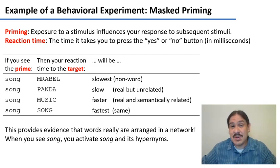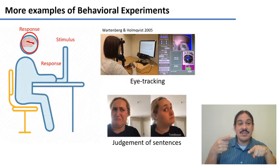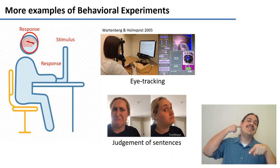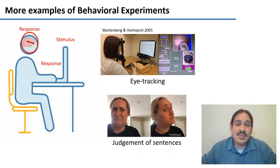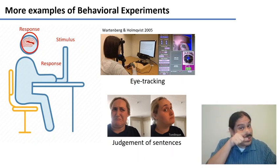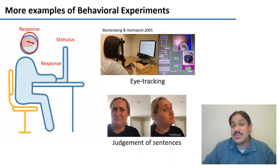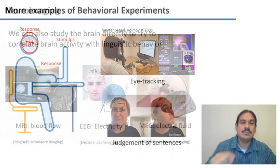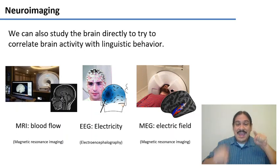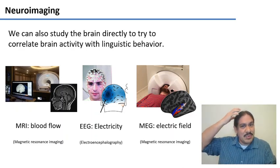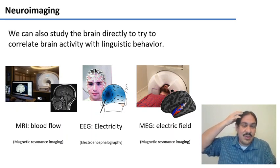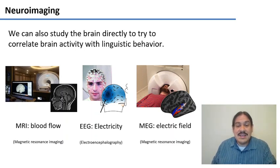This is a type of behavioral experiment — we look at your reaction to a stimulus. A stimulus from the screen enters your eyes, goes to your brain, and then you respond through your fingers on the keyboard. There are also experiments involving eye tracking, which follows your eyes as you read, and grammaticality judgments of sentences — used in syntax, for example. These all observe behavior, examining your brain indirectly. We can also look at the brain directly: blood flow through MRI, electric fields from neurons using EEG or electroencephalography, or electromagnetic fields using MEG.